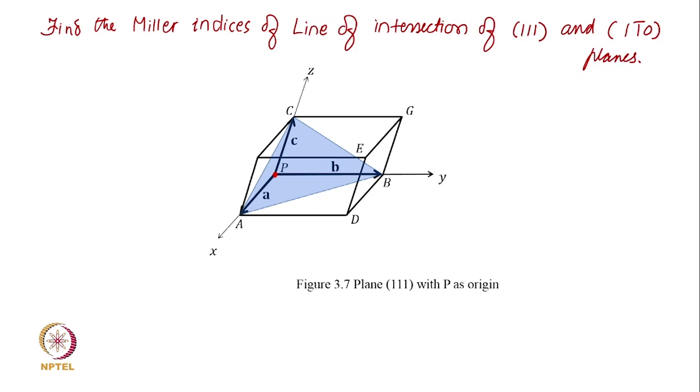Draw both the planes. One plane is already drawn for you. Draw in the same unit cell, draw another plane that is 1 1 bar 0. You already saw that plane in the previous one. You can try to draw this here. And then try to observe what is the common direction. 2 2 1 bar.